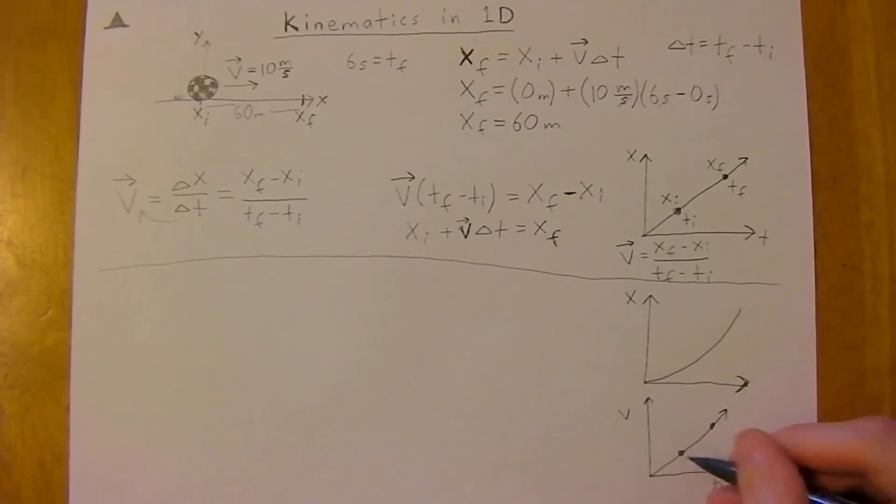And if you take the slope of this, so your velocity final minus your velocity initial, time initial.